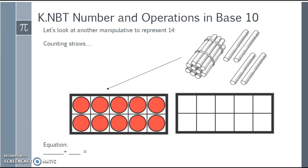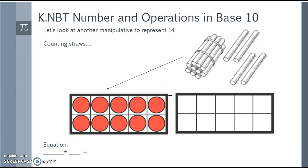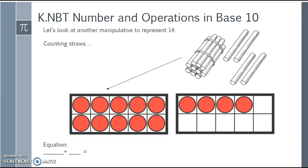Let's look at another manipulative to represent 14. We have a group of straws — I've bundled 10 groups of 1, so now I have one group of 10 and four individual straws. I can also attribute that to my 10 frames: one group of 10 is the same as having 10 counters in my 10 frame, and then I need four more counters in another 10 frame to represent 14.